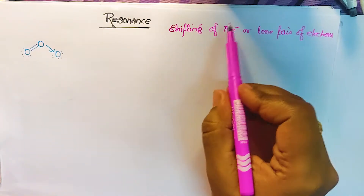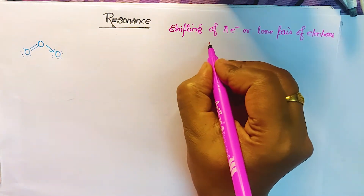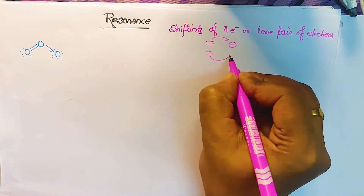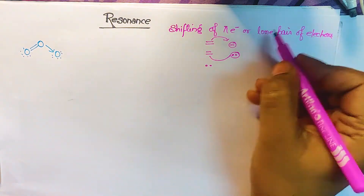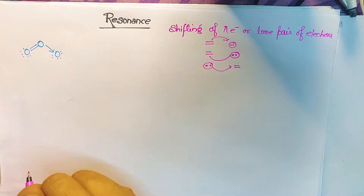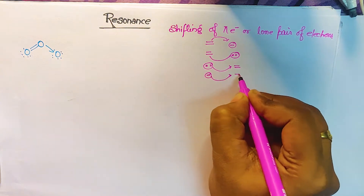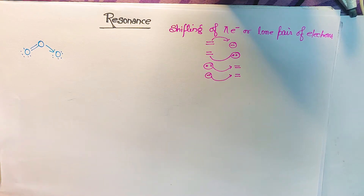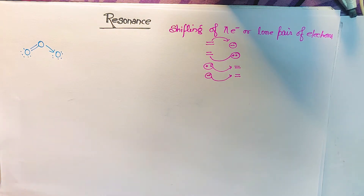Whenever a pi bond shifts, it can result in the formation of a negative charge, or it can be converted into an electronic form. When a lone pair of electrons shifts, it can form a pi bond, and if a negative charge shifts, it can also form a pi bond. In this resonance topic, we'll draw a few simple examples, and I'll also cover resonating structures from the hydrocarbon and GOC (General Organic Chemistry) chapters.